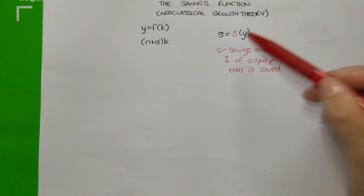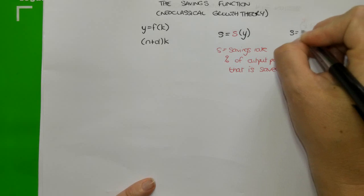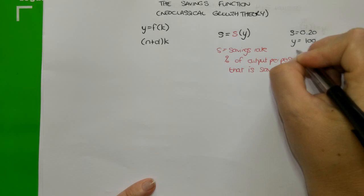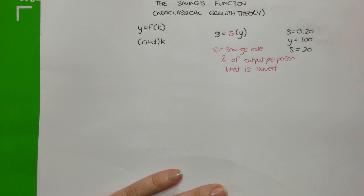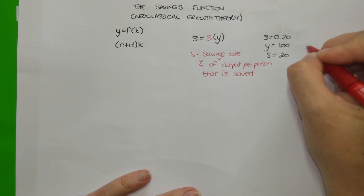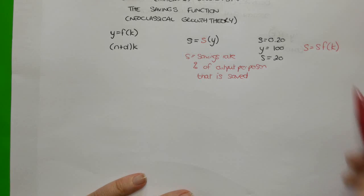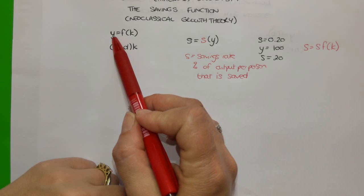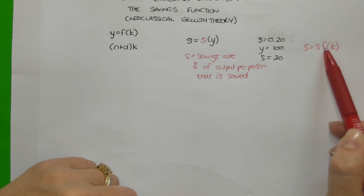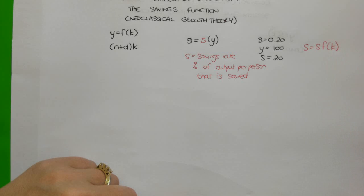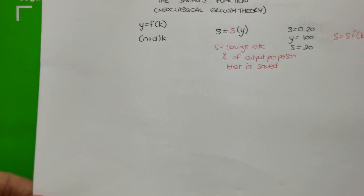And Y is output per person. For example, if the Savings Rate is equal to 20% and output per person is equal to 100, then Savings Per Person is equal to 20. You may also see the Savings Function written as S equals s times F(K). We can do that because F(K) is simply Y. So this is another way of writing that the Savings Function is dependent on output per person, because output per person is a function of capital per person. This way of writing the Savings Function is very useful when it comes to graphing it.